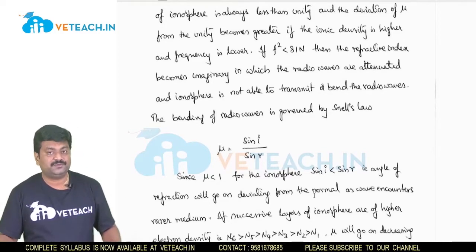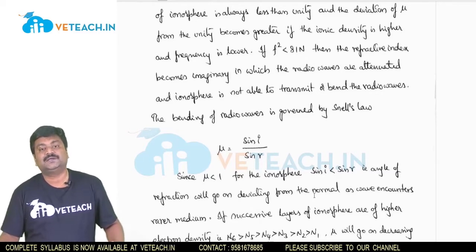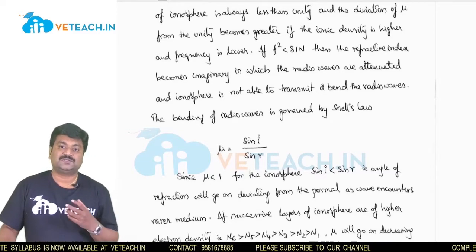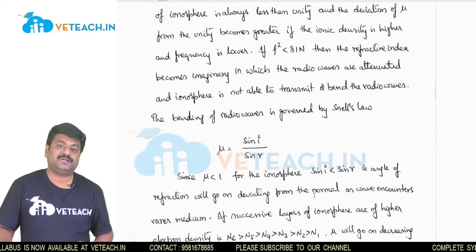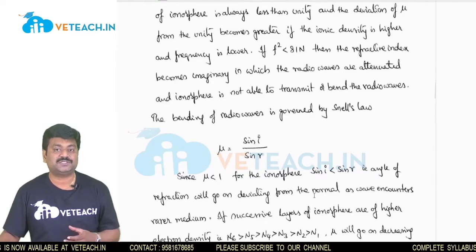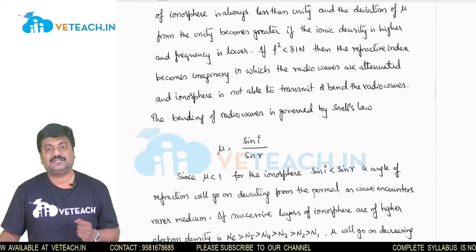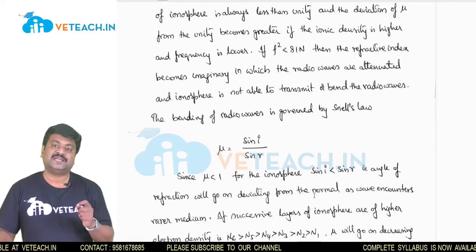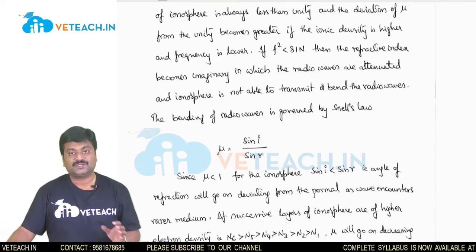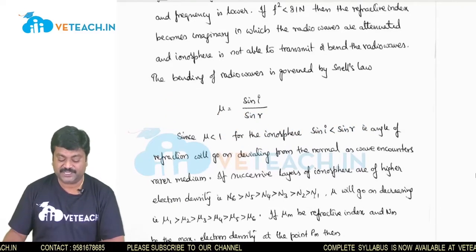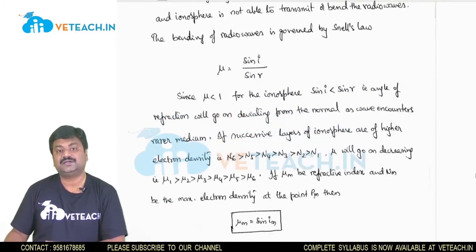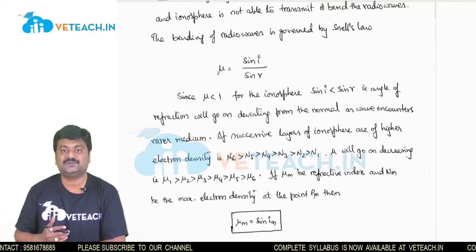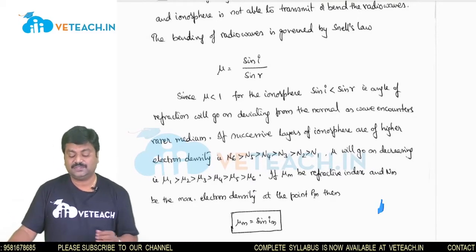For proper bending of radio waves in the ionosphere region, we need to follow Snell's law. Snell's law defines the refractive index on the basis of the incident ray to the reflected ray: mu equal to sin i divided by sin r. If mu is less than unity, then the angle of incidence is always less than the angle of reflection.